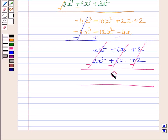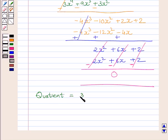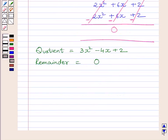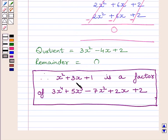Since the remainder is 0, this implies x squared plus 3x plus 1 is a factor of 3x raised to the power 4 plus 5x cubed minus 7x squared plus 2x plus 2. So, the quotient is equal to 3x squared minus 4x plus 2 and the remainder is equal to 0. Therefore, x squared plus 3x plus 1 is a factor of 3x raised to the power 4 plus 5x cubed minus 7x squared plus 2x plus 2.